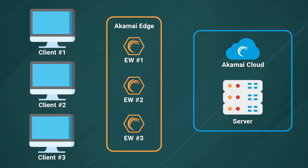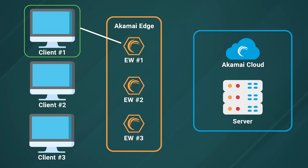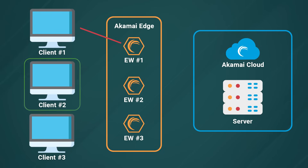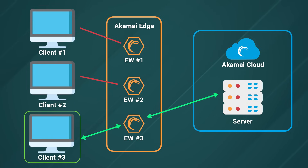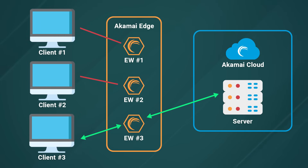In this example we have the same clients making the same requests, but all requests are passing through the Akamai edge first. Client number one with the missing authorization header goes to an edge worker and is rejected right away. Client number two has an authorization header but an invalid token and is also rejected by the edge worker. Client number three successfully sends an authorized request, which gets verified by the edge worker and passed along to the origin server, meaning the origin server has less work to do. These requests are handled by the closest edge worker to the user based on their geographical location.